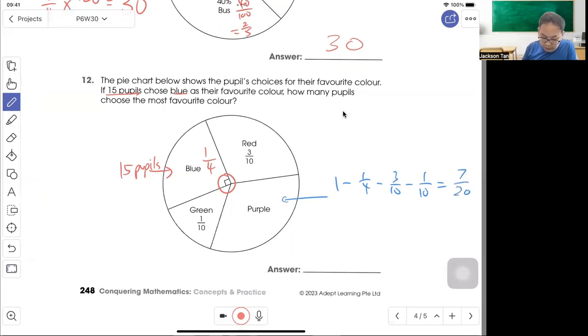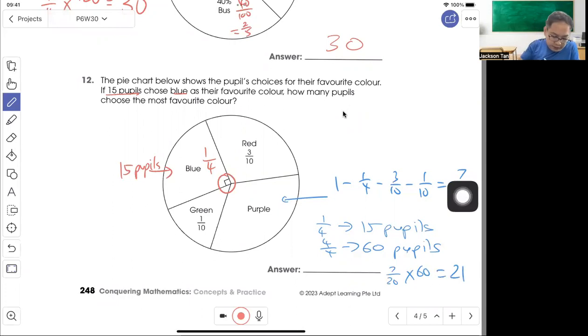So let's continue. 1 quarter is 15 pupils. So there are a few ways to do it. Of course, if one whole, there will be 60 pupils. And it mentions that 7 out of 20. So 7 out of 20 times 60 pupils, that's 21 pupils. So answer is 21 pupils, the most favorite color.